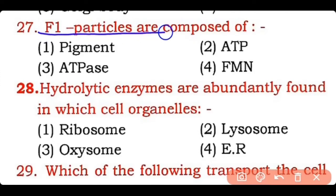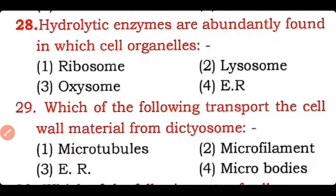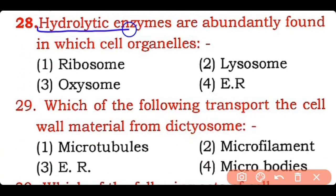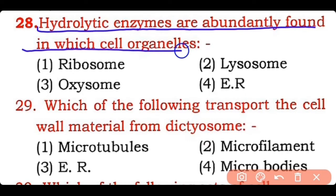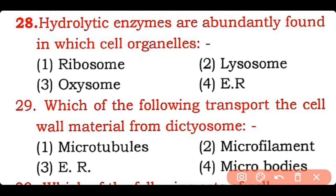Question 27: F1 particles are composed of — pigments, ATP, ATP synthase, or adenine mononucleotide? Correct answer is option three — F1 particles contain ATP synthase enzyme. Question 28: Hydrolytic enzymes are abundantly formed in which cell organelle — ribosome, lysosome, oxysome, or endoplasmic reticulum? Correct answer is option two — lysosomes contain most of the hydrolytic enzymes.